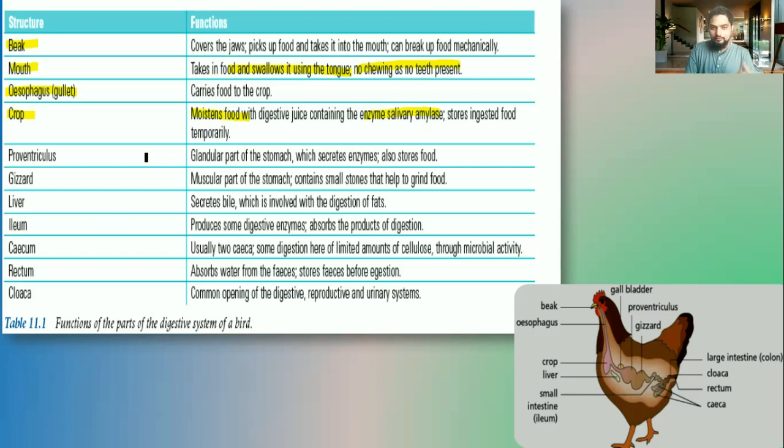After the food is in the crop, it moves down into the proventriculus. And in this part, it also secretes some enzymes and the food is stored for a period of time. The food then moves to the gizzard.